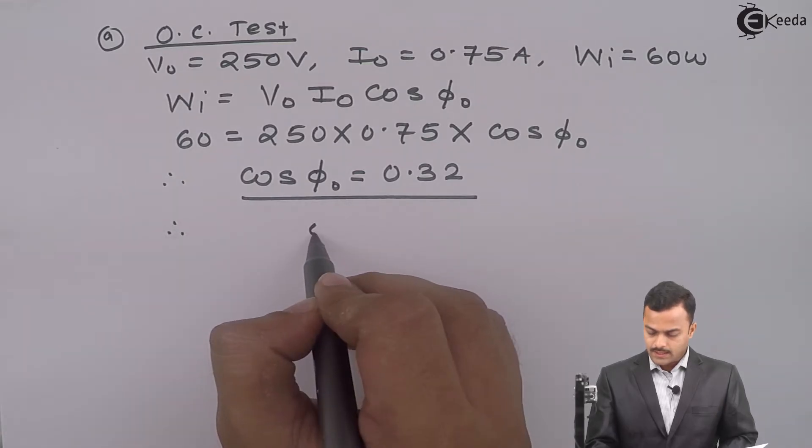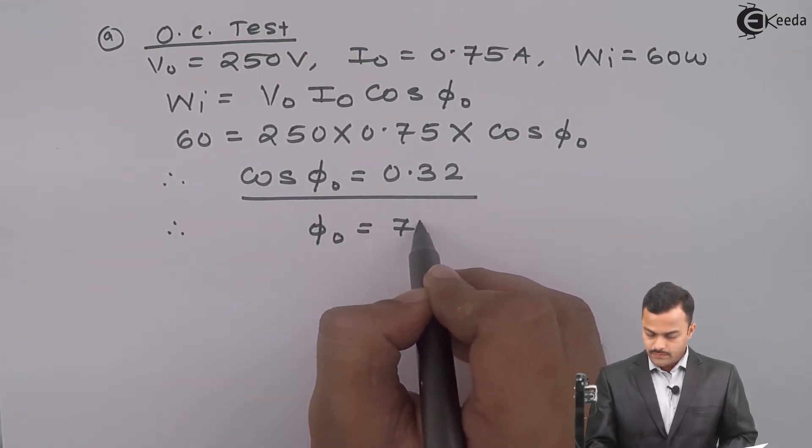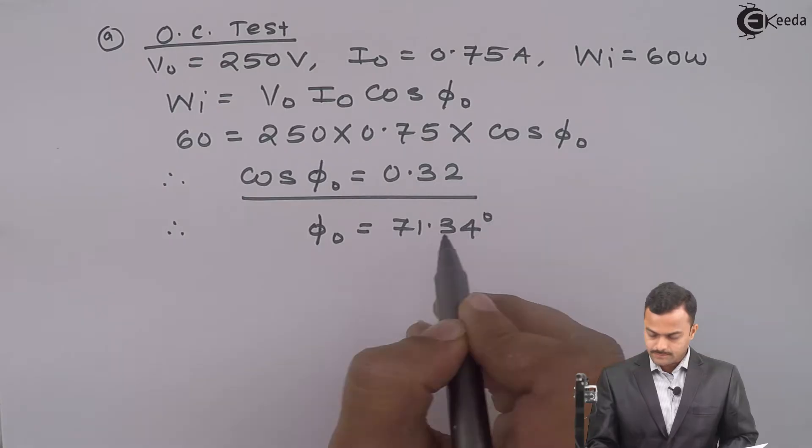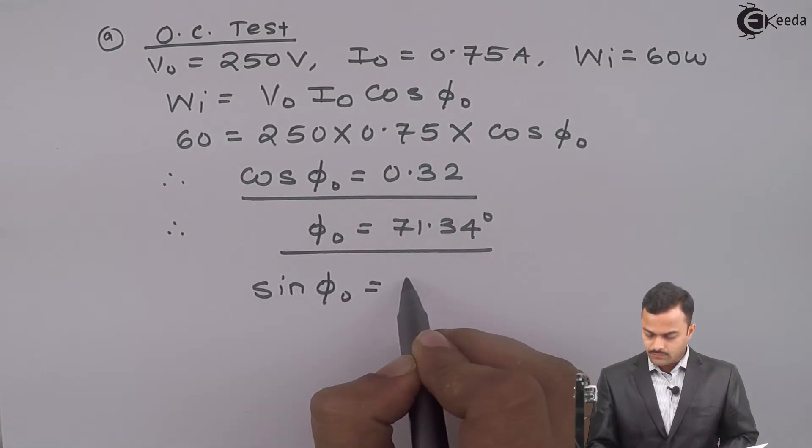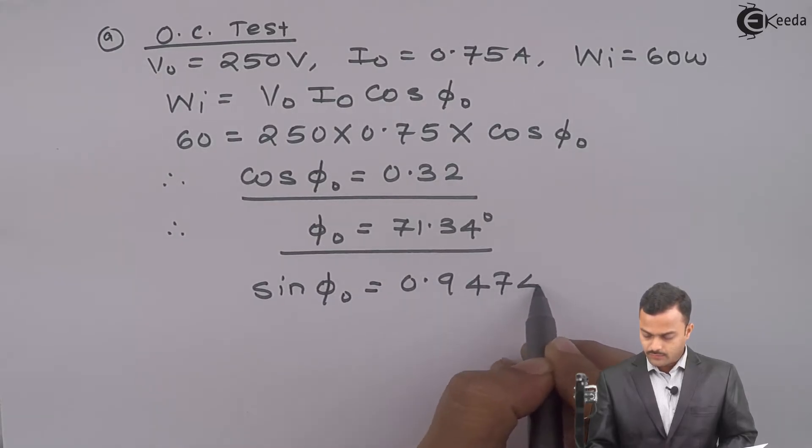From this, I can get φ0 equals 71.34 degrees. And sine component you will get equal to 0.9474.